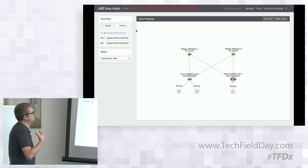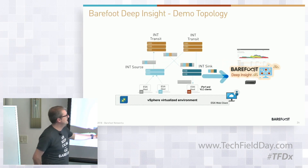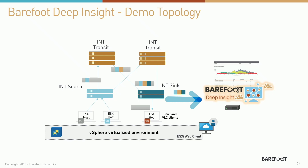Here we have a leaf-spine architecture for the demo. The leaf switches are the INT source and sink, and the spines are the INT transit nodes. We have a vSphere virtualized environment with VLC servers and VLC clients. We use VLC to stream video because video can be susceptible to packet loss.